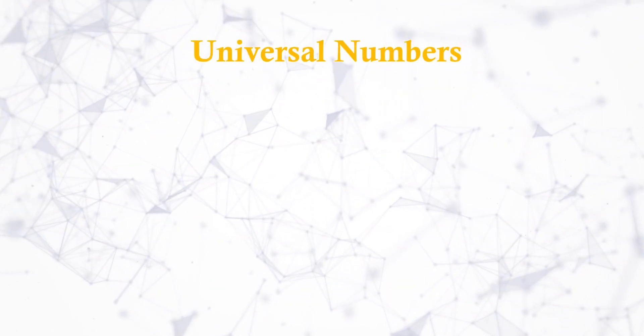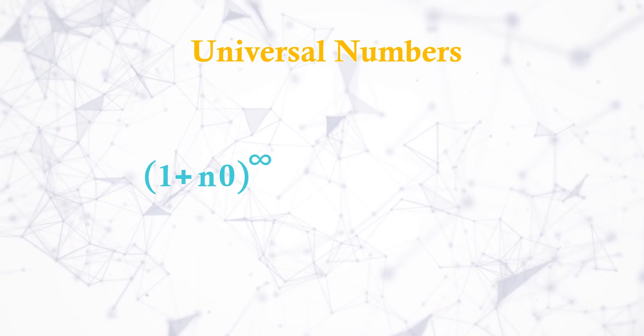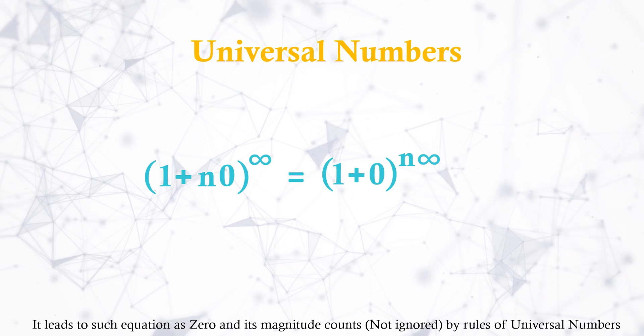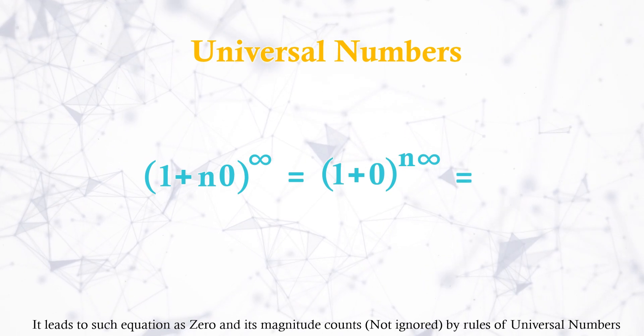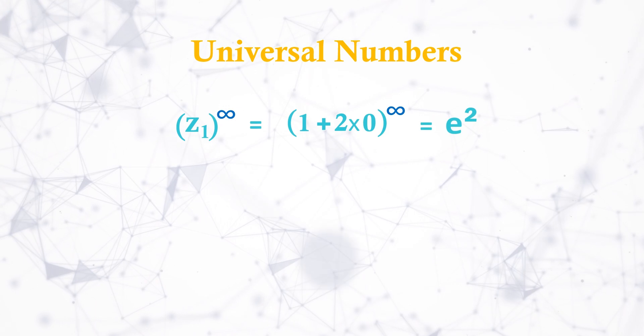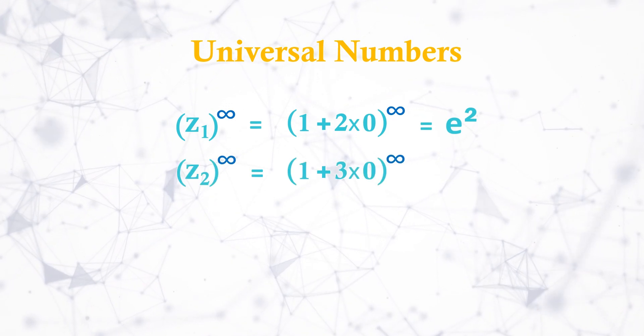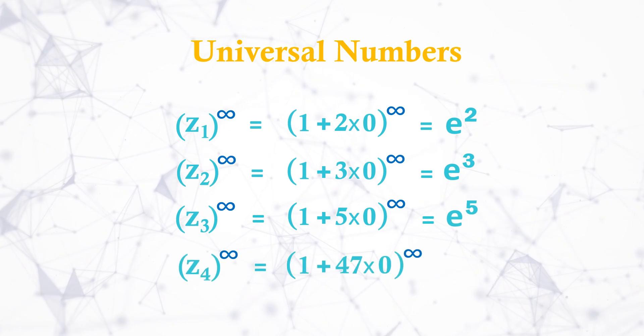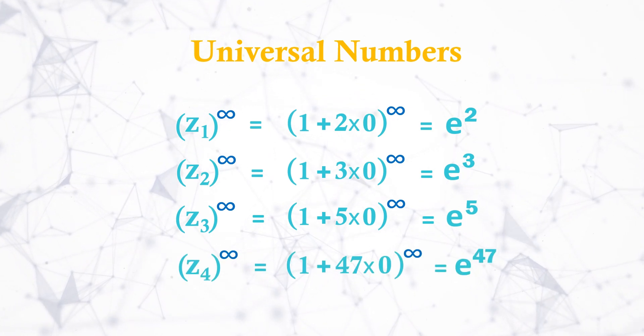But in universal numbers there is a proven relation that (1 + n × 0)^∞ = (1 + 0)^(n×∞) = e^n which means z₁ = e², z₂ = e³, z₃ = e⁵, z₄ = e⁴⁷ and so on.